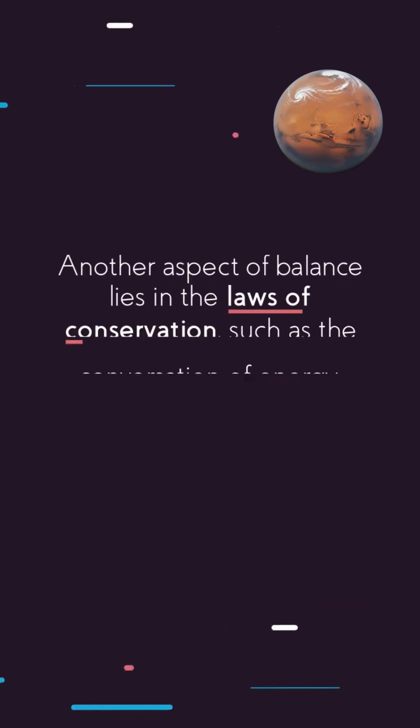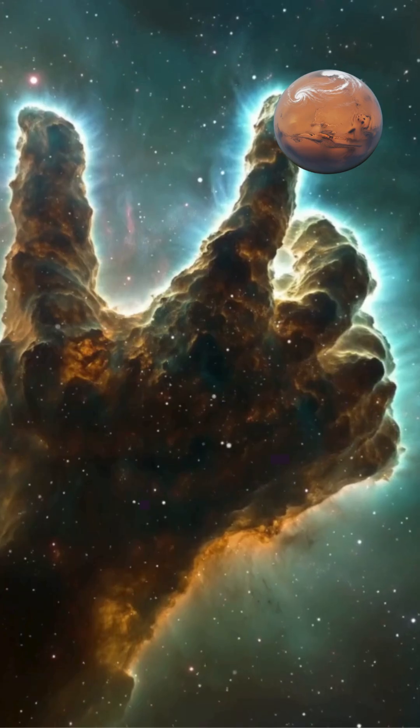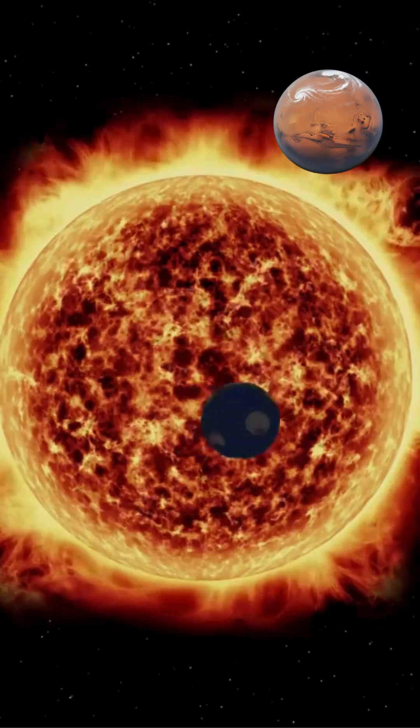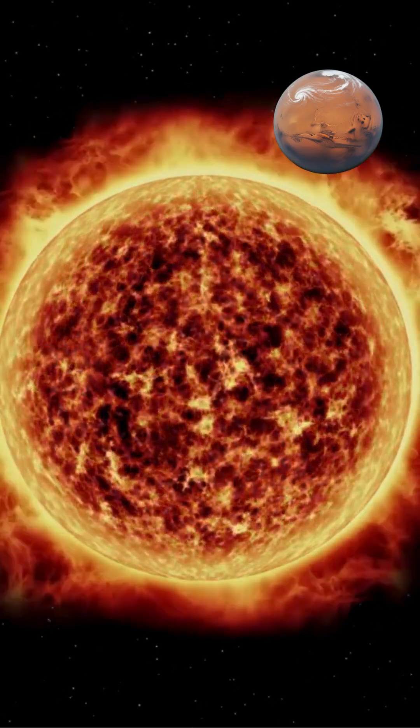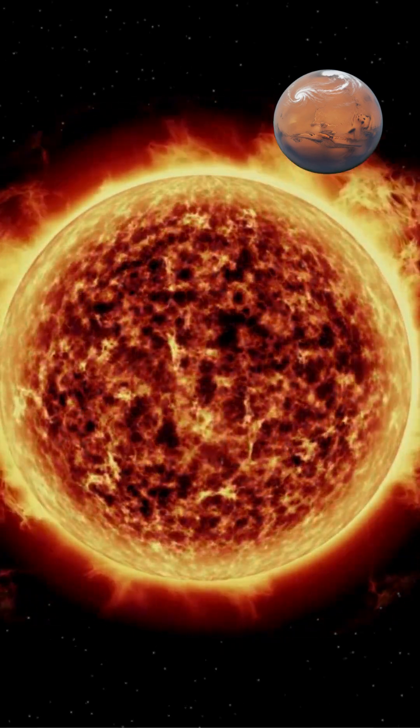Another aspect of balance lies in the laws of conservation, such as the conservation of energy, momentum, and angular momentum. These principles ensure predictability and stability in physical systems. For example, a planet's orbit stays consistent because its angular momentum is conserved, unless acted upon by external forces.